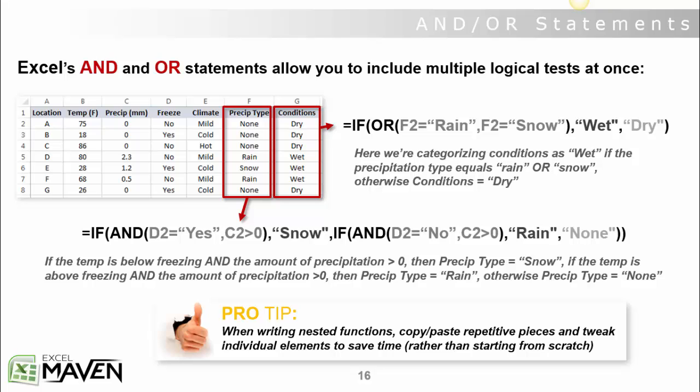Now, if you remember the nested if syntax, instead of the value of false, we move right on into our second logical test, which is another if and statement. In this case, we're saying if and D2 equals no, so it's not freezing, temperature's above 32 degrees, and also precipitation is greater than zero. Then precipitation type equals rain.